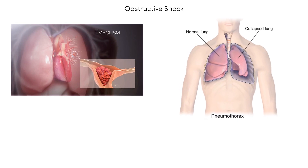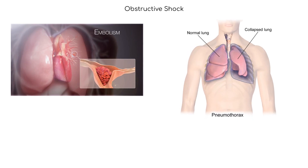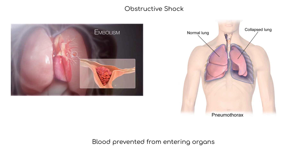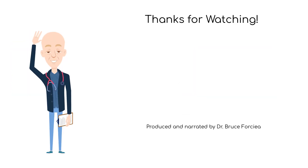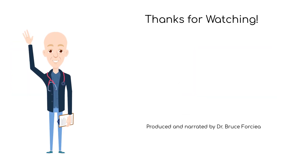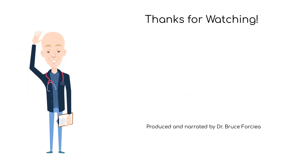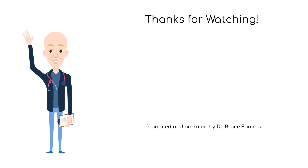Obstructive shock occurs when there is a blockage in the blood flow, such as a pulmonary embolism or tension pneumothorax. The blockage prevents the blood from circulating properly, leading to organ damage and failure. I hope you have learned about shock. Thanks for watching, and see you next time!